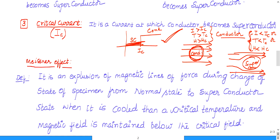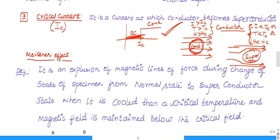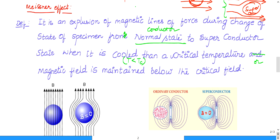When the conductor becomes a superconductor, the magnetic lines of force will be repelled — they go away from the superconductor because it hates magnetism. The Meissner effect is the expulsion of magnetic lines of force when a conductor is converted to a superconductor. To convert a conductor to a superconductor: maintain temperature below Tc, or maintain magnetic field below Hc, or maintain current below Ic — any one of these conditions is sufficient.